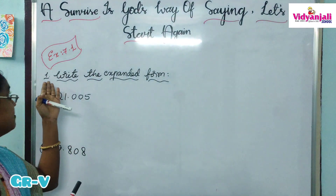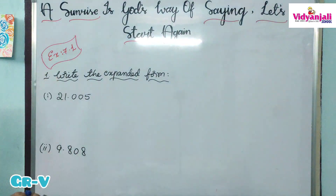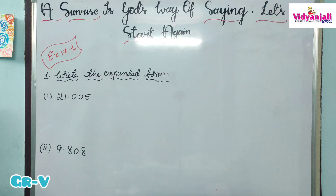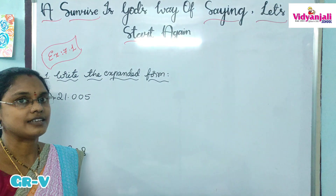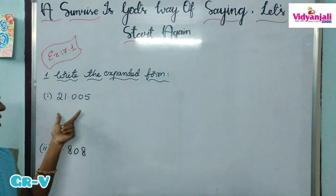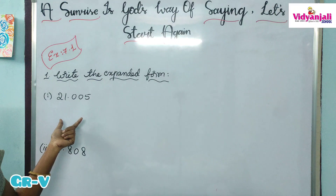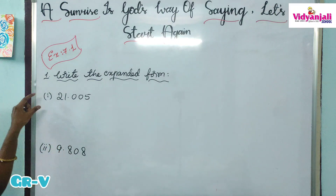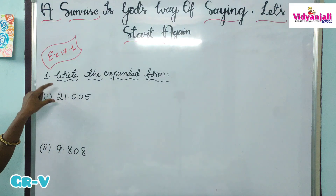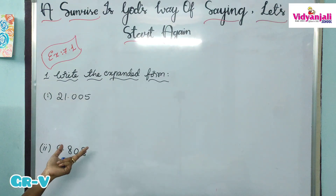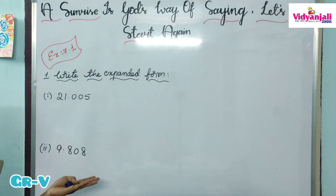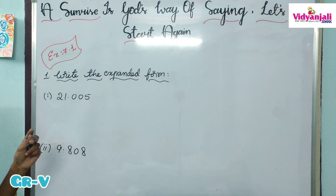The first question is write the expanded form. Expanded form we also discussed in the last class. Expanded form is nothing but if we write the place value of each digit and then put plus between them, that is expanded form.